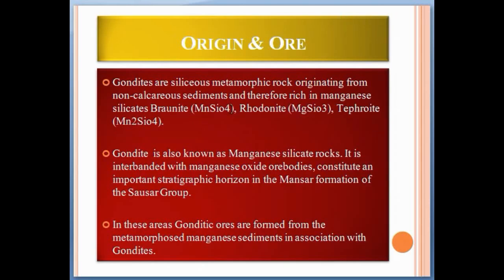Gondite are siliceous metamorphic rocks originating from non-calcareous sediments and therefore rich in manganese silicates like braunite, rhodonite, and tephroite. These are the ores of manganese. Gondite is also known as manganese silicate rock. It is inter-banded with manganese oxide ore bodies and forms a constant and important stratigraphic horizon in the Saucer Group formation.